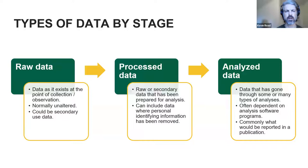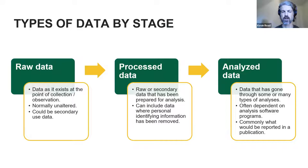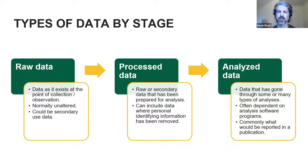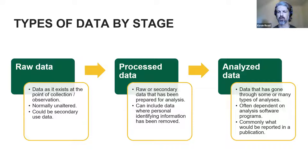We also want to think about data by stage, in three component parts. Raw data is data as it exists at the point of collection — usually unaltered. Processed data is data that has been transformed or manipulated in some way and prepared for analysis, often with personal identifying information removed. Analyzed data has gone through some type of analysis, often dependent on a piece of software, and is commonly what you would see reported in a publication. Think about what stage of your data is most valuable for someone else to see.